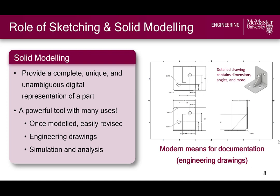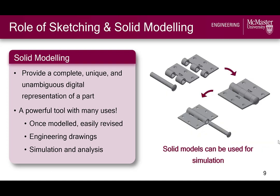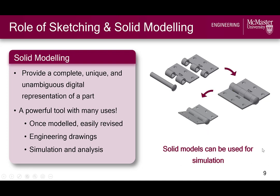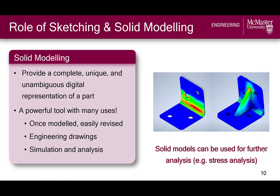And since solid models completely define part geometry, they can be used for things like simulation and analysis. We can use solid modeling software to show how parts can be assembled together and how they interact — an example being this door hinge assembly and its animation. We can also perform further analysis on solid models like static stress analysis on our L-bracket, where we place it under some load and see how it deflects.